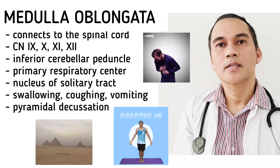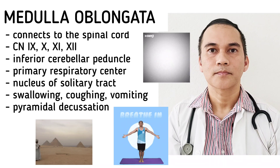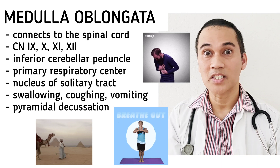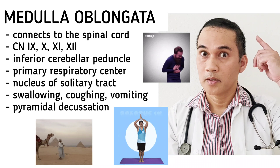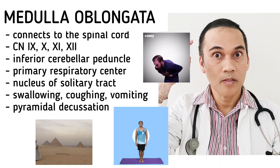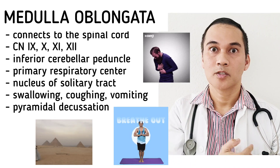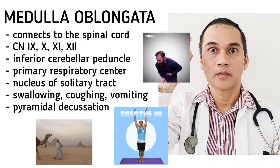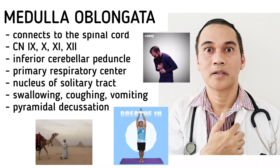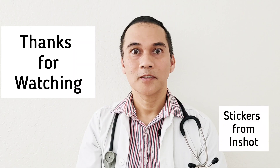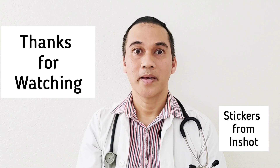The medulla contains many reflexes — reflexes for swallowing, chewing, and vomiting. It is also the site for the pyramidal decussation. The corticospinal tract, which originates from the right hemisphere, decussates in the medulla and crosses to the other side of the body. That is why if you have a lesion on the right side of the brain, the movement affected is on the left side, because it decussates in the medulla. That is all for today — watch out for part 2, which covers the limbic system and the basal ganglia.